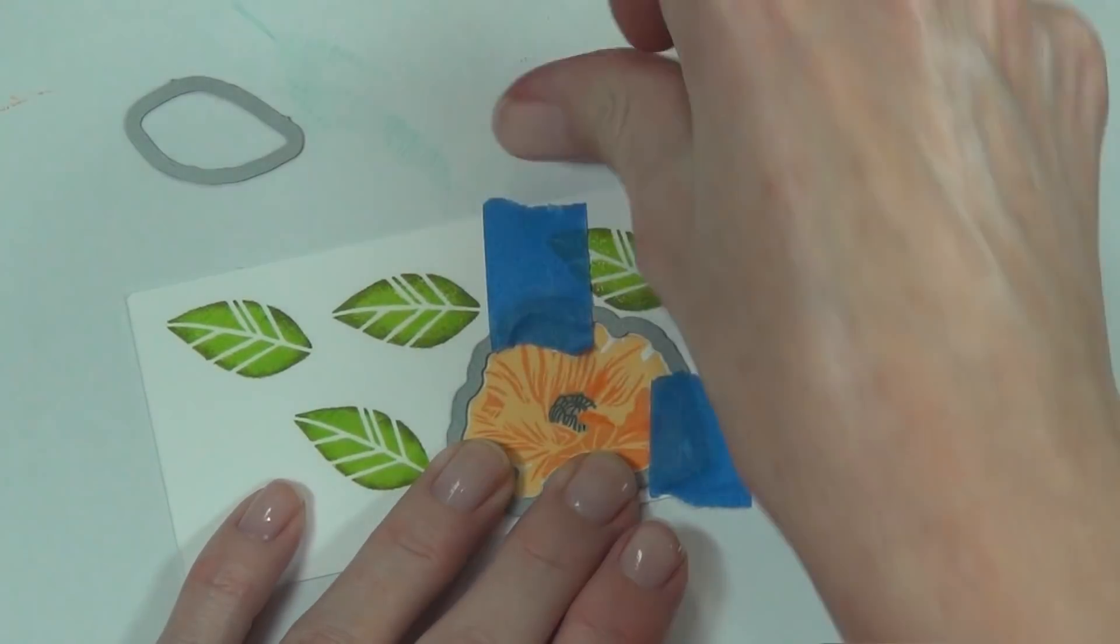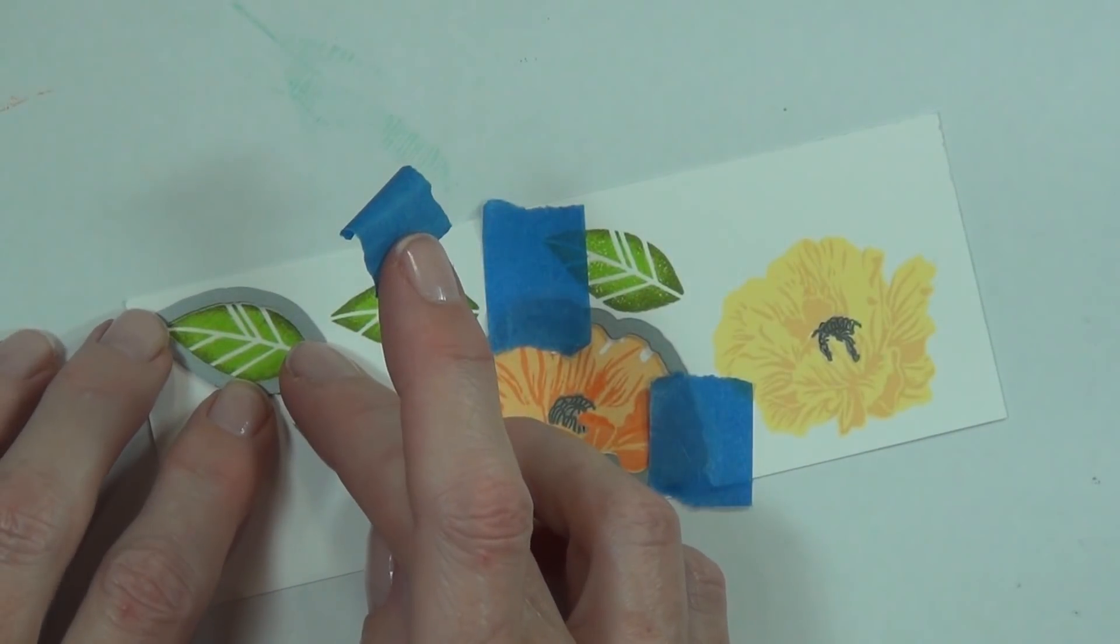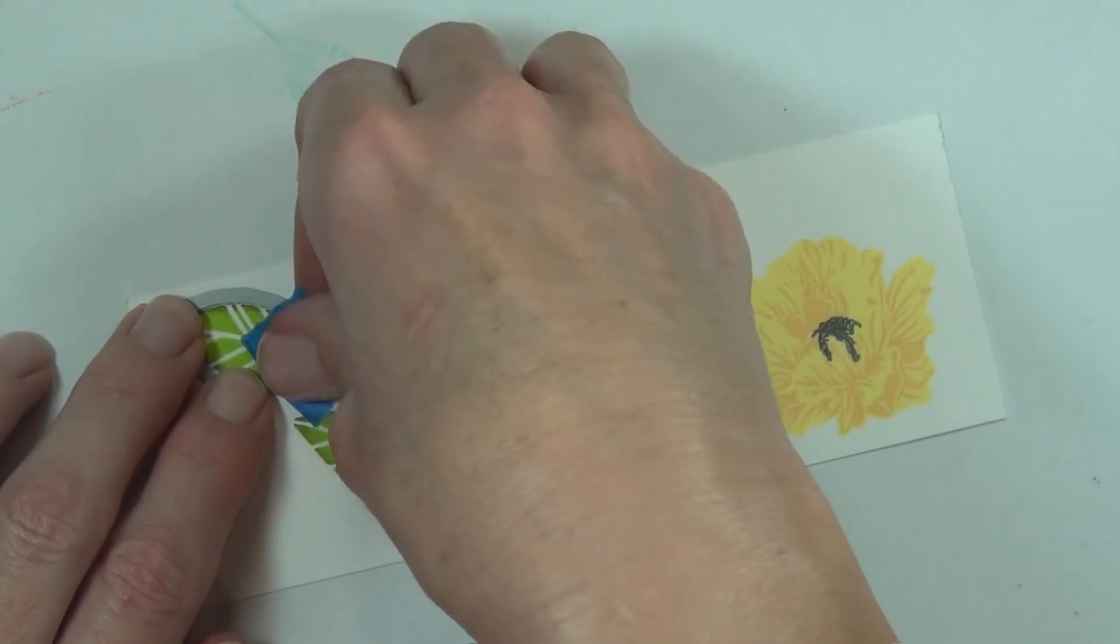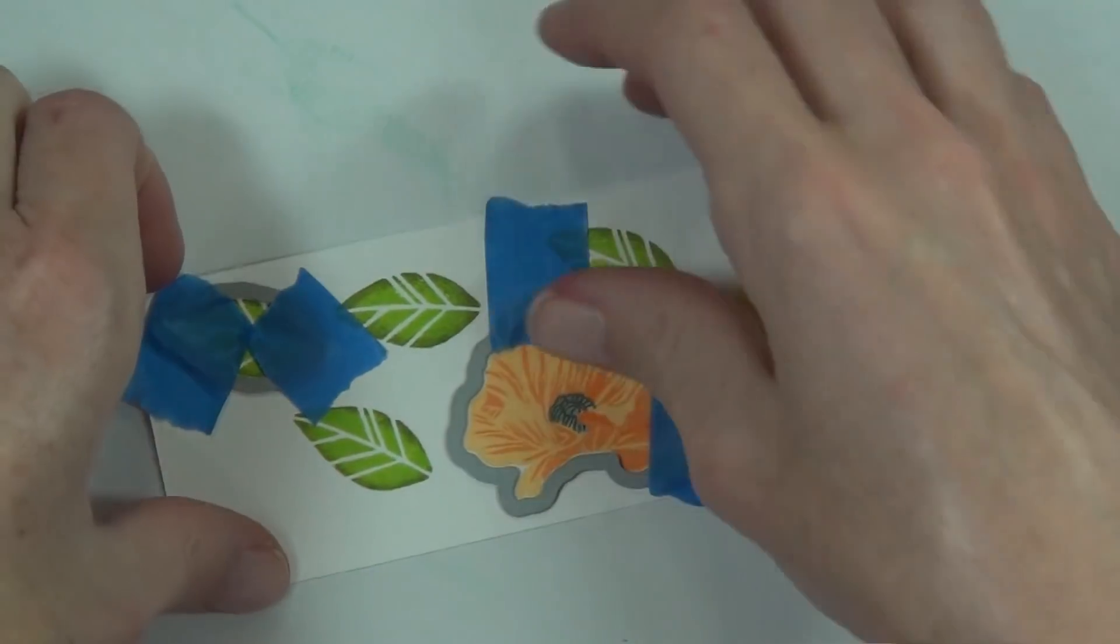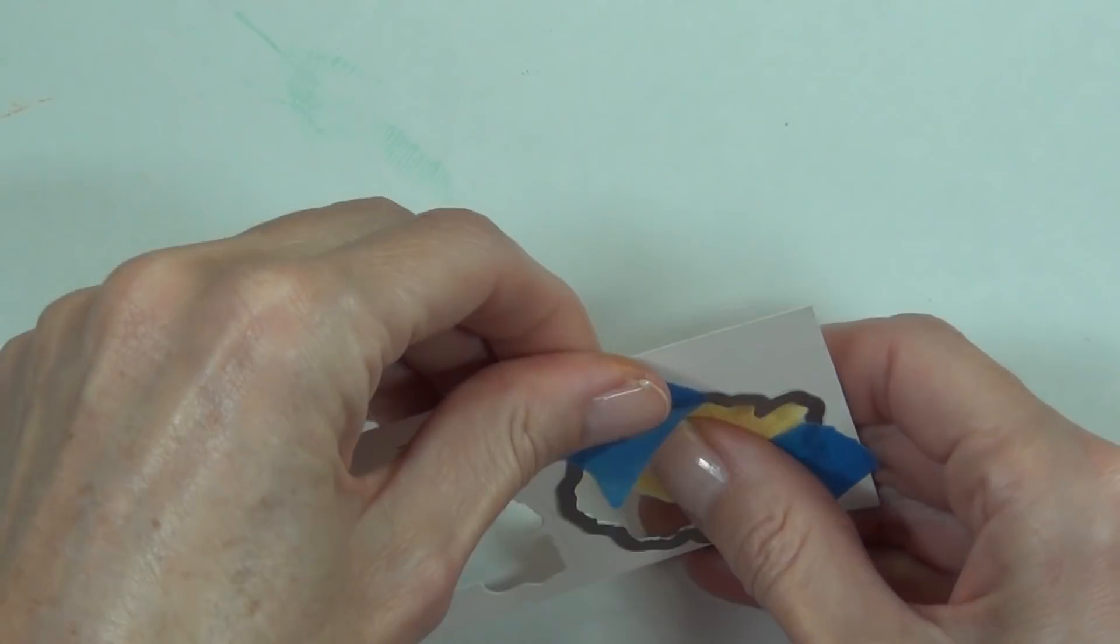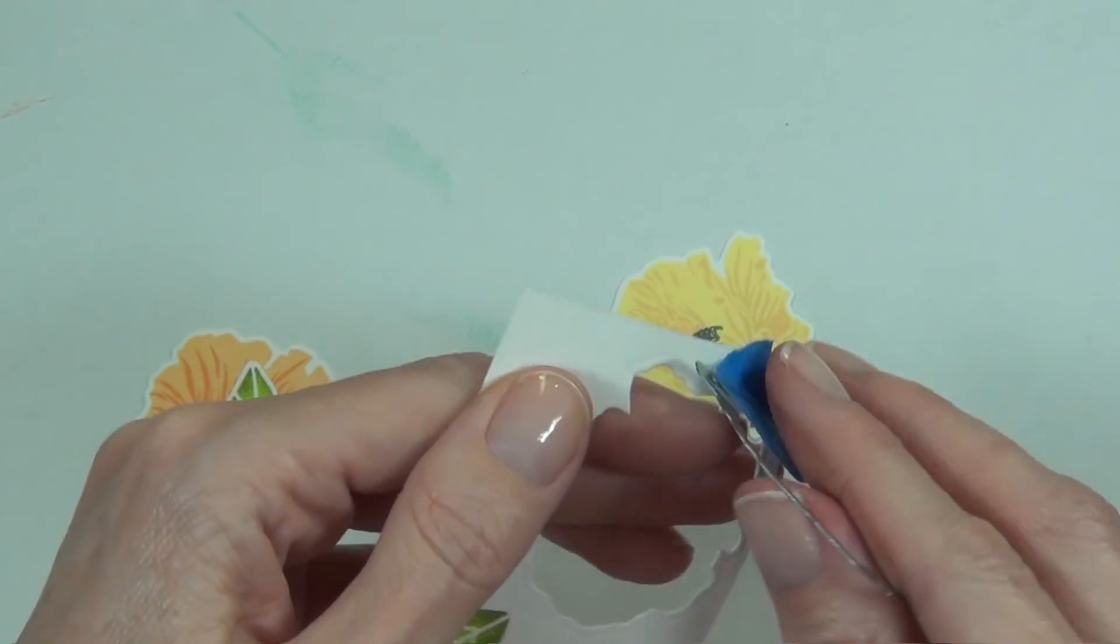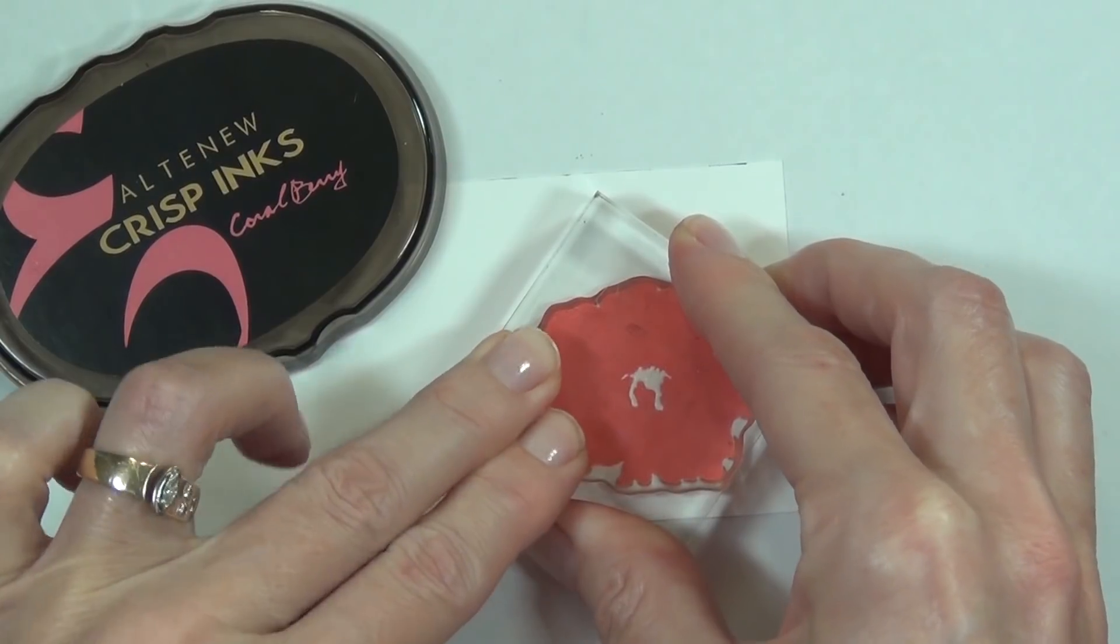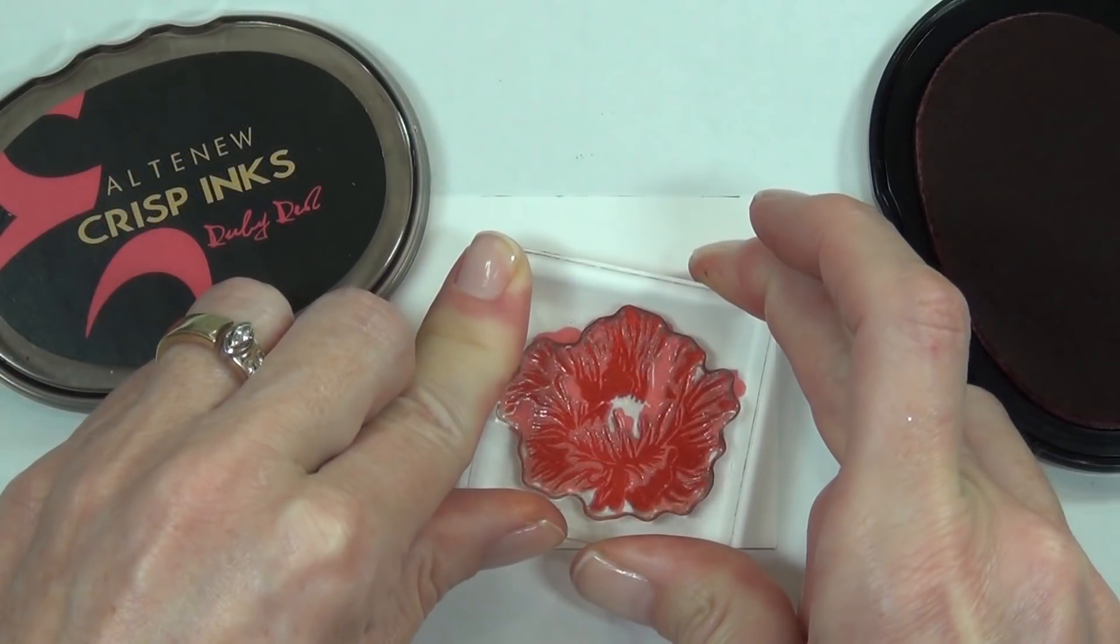I've got the coordinating dies for both stamp sets. The Poppy Field stamp set comes with coordinating dies. I'm just going to run these all through my die cutting machine. The last color I'm using for my poppy is the Coral Berry, then I used Ruby Red as the shadow color. This just blew me away, it was so beautiful.